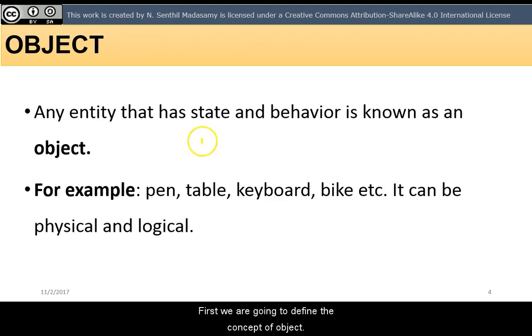First, we are going to define the concept of object. Any entity that has state and behavior is known as an object. For example, pen, table, keyboard, bike, etc. It can be physical or logical.